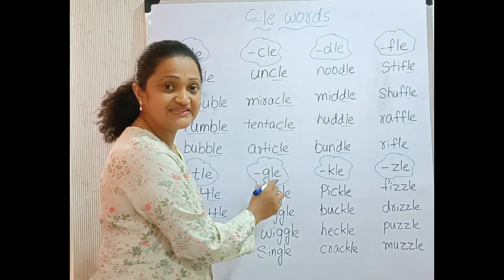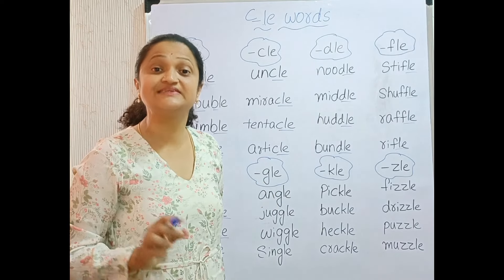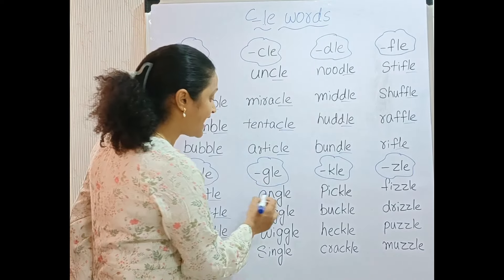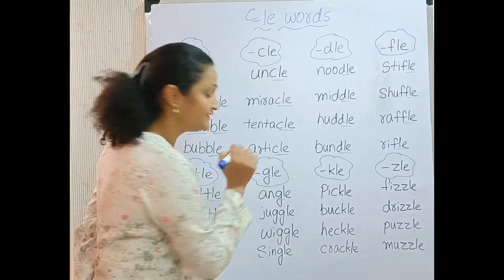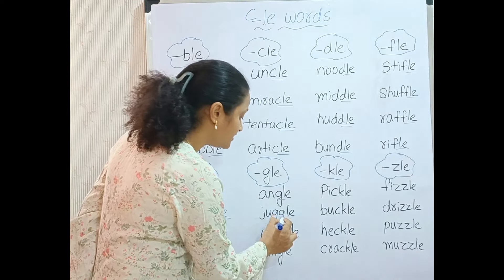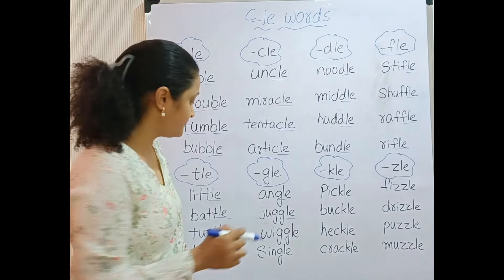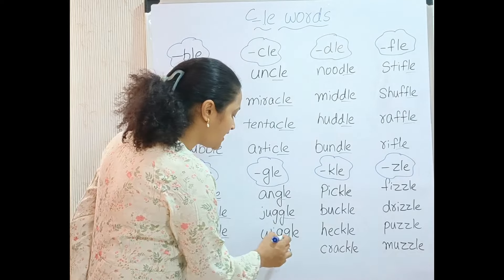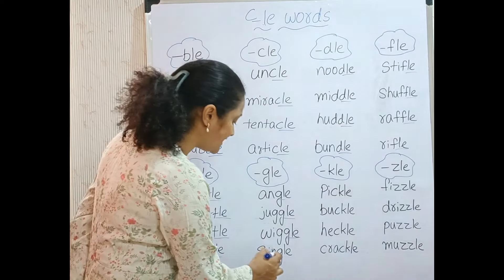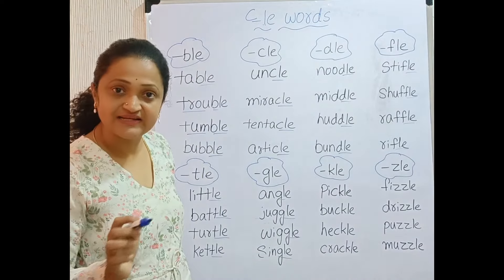The word ends with G-L-E. The sound is GLE. ANGLE. JUGGLE. WIGGLE. SINGLE.